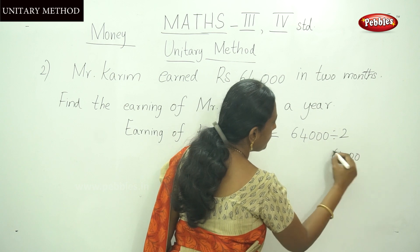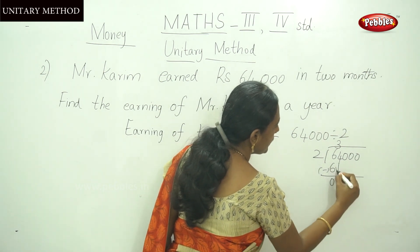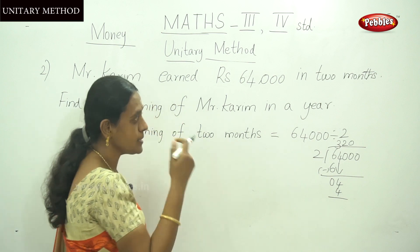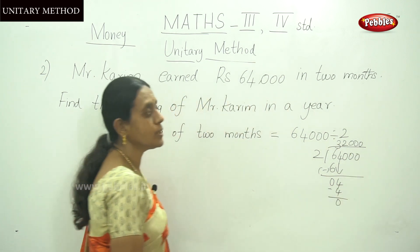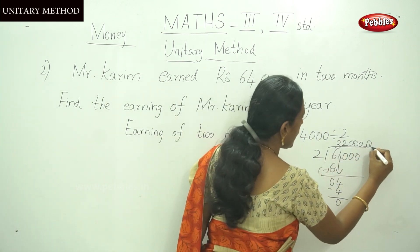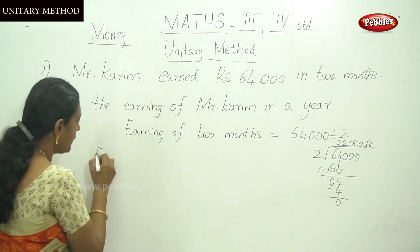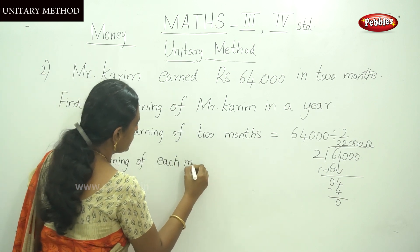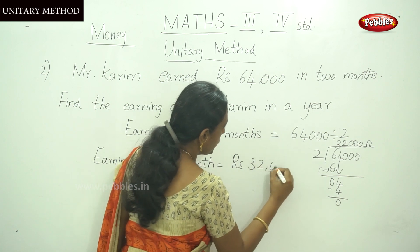64 divided by 2: 3 twos are 6, bring down 4, and 2 twos are 4, with no remainder. So 64,000 divided by 2 gives a quotient of 32,000. The earning of each month is rupees 32,000.